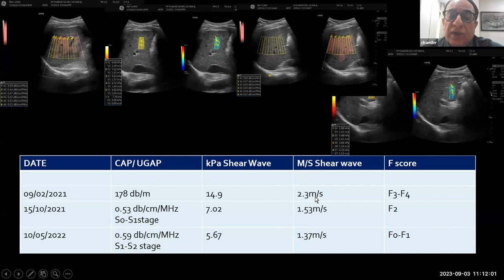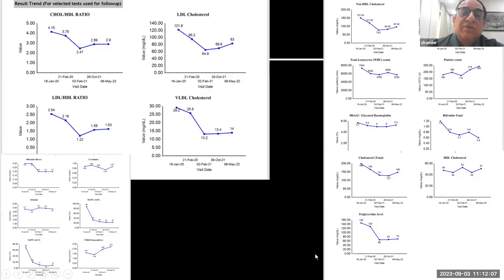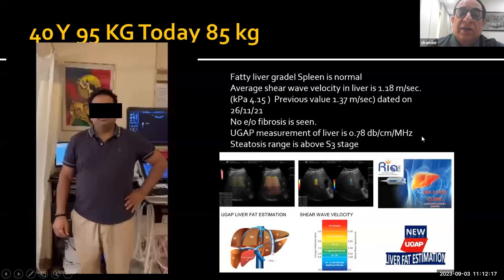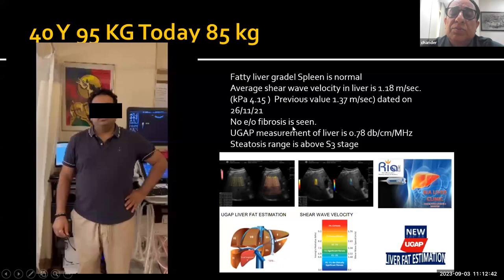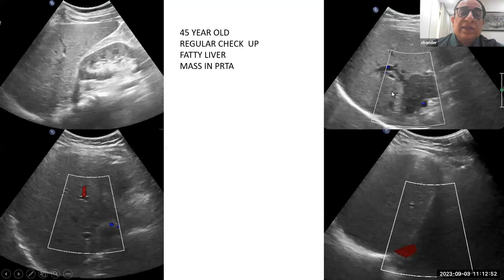His CAP and shear wave velocities and fibrotic score dropped sequentially. We started with CAP at 178, brought it down to 0.59 S1-S2 stage measured in decibels per centimeter per MHz. kPa dropped from 14 to 5 — near normal. Even a high value of 2.3 is today 1.37. Laboratory values show a downturn in cholesterol, sugar, glycohemoglobin, etc. We kept this video on our screen, and another patient — 40 years old, 95 kg, now 85 kg — embarked on the same journey. Today he has fatty liver grade 1 instead of grade 2, and his fibroscan value dropped from 1.37 to 1.18.